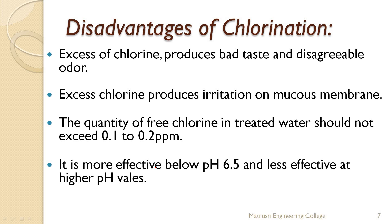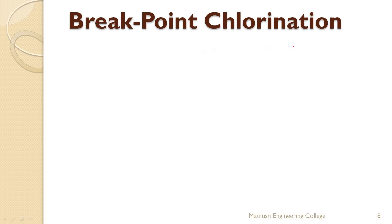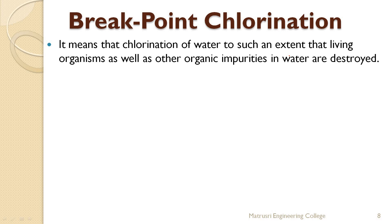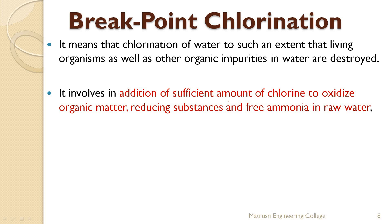To overcome these disadvantages, we have a technique called breakpoint chlorination. In this method, chlorine is added in dosages so that, turn by turn, all impurities like living organisms and organic reducing matter are completely destroyed. Breakpoint chlorination means chlorination of water to such an extent that living organisms as well as other organic impurities in water are destroyed. It involves addition of sufficient amounts of chlorine in dosages.